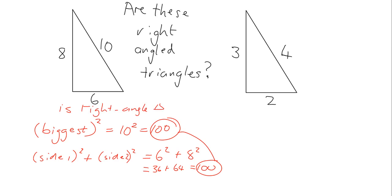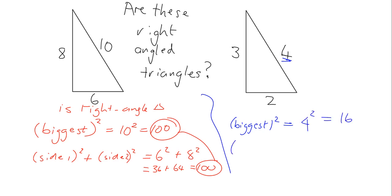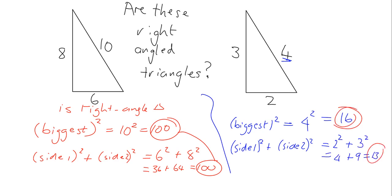Let's try this one. The biggest side is 4, so 4 squared equals 16. Now we look at the other two sides squared and added together: 2 squared plus 3 squared equals 4 plus 9 equals 13. This and this are not equal to each other, and so this is not a right-angled triangle.